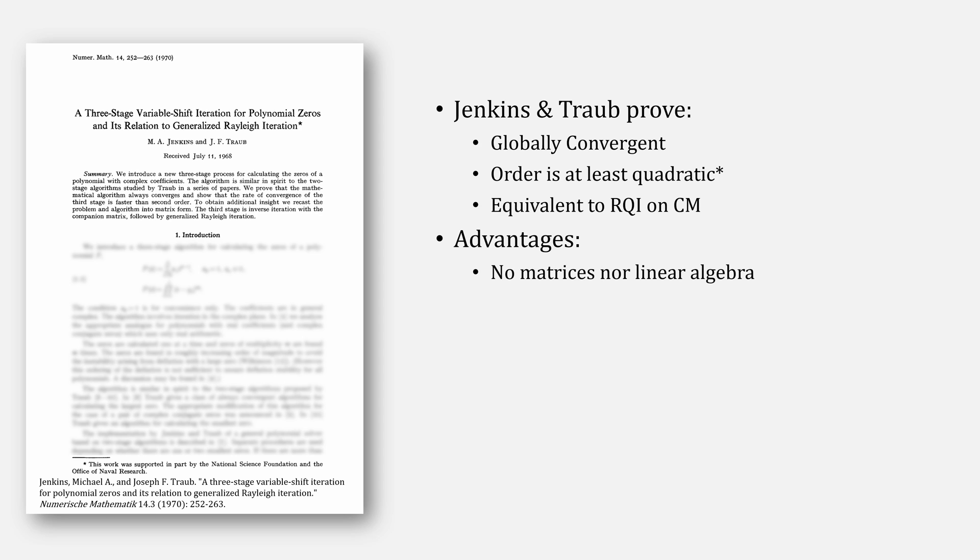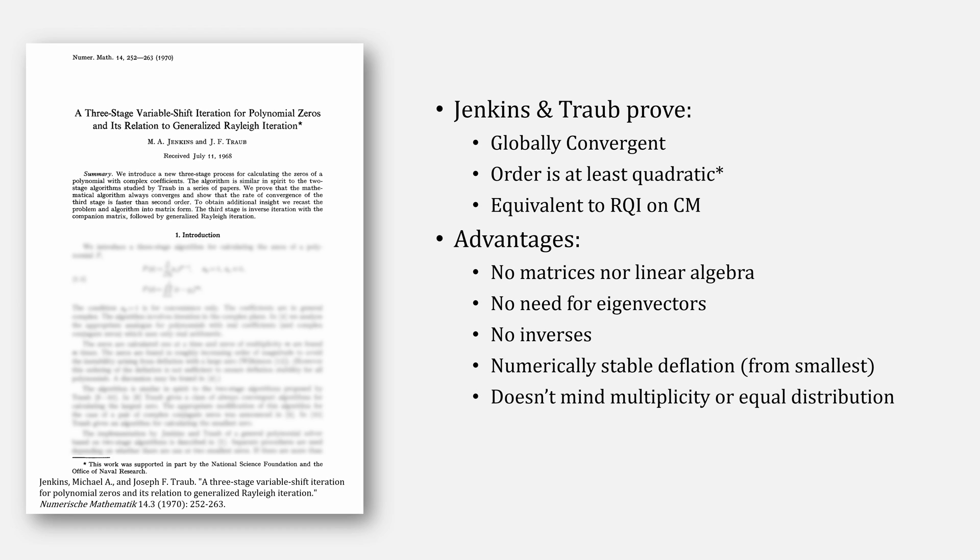Jenkins and Traub were able to prove that the method is actually globally convergent, and that it is at least quadratic. The method is equivalent to the Rayleigh quotient iteration on a companion matrix, and a few key advantages are that there are no matrices nor linear algebra, there's no need for eigenvectors, there are no inverses, and the method is numerically stable assuming you're deflating from the smallest root. And also it doesn't mind about multiplicity or the distribution of your roots.